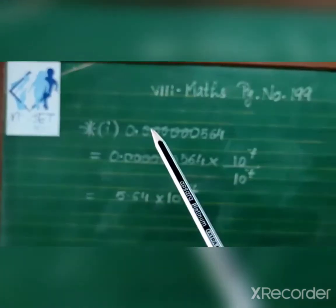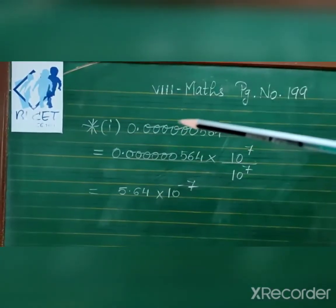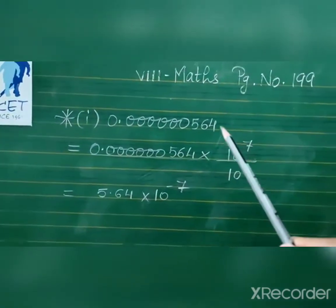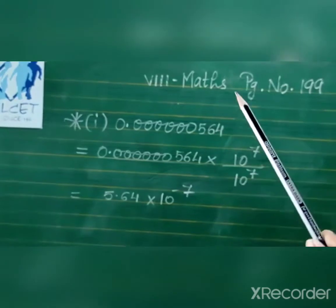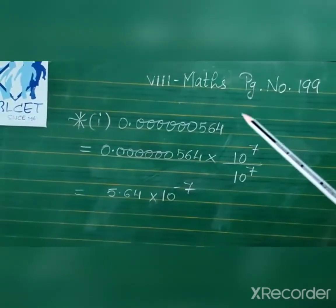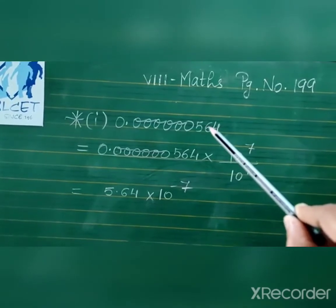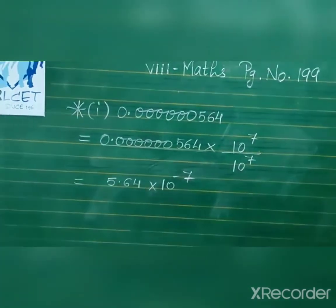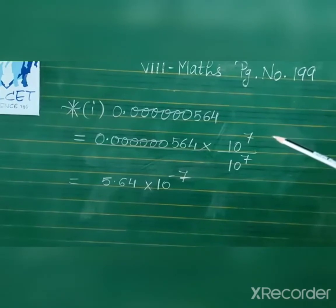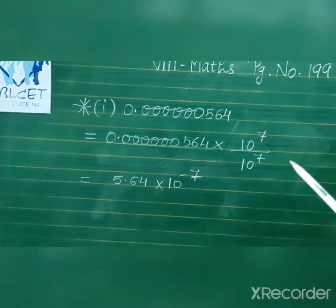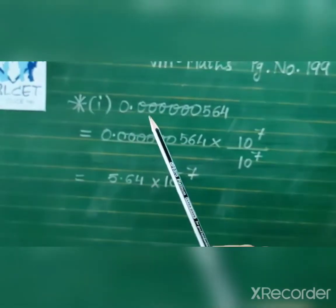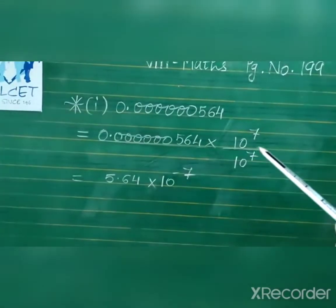The number is 0.00000564. In standard form, we want a decimal after one digit, and after the decimal there should always be two digits. So we want the decimal to be moved to the right-hand side. When sending the decimal right, we count: one, two, three, four, five, six, seven — so we use 10 to the power 7.